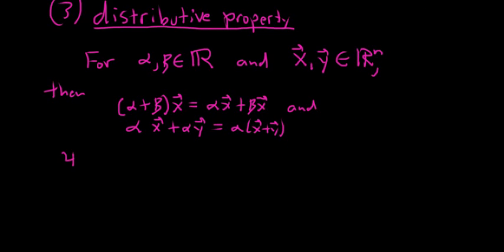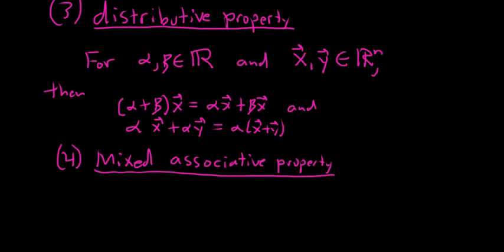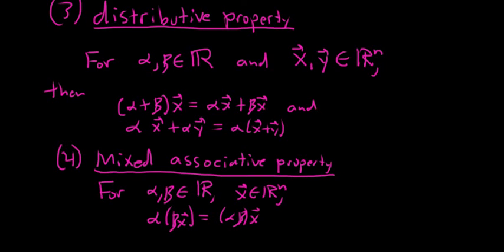Then we have four, which is called mixed associativity or the mixed associative property. It's kind of a strange property, not something people often talk about. People almost take it as common sense. For alpha and beta in the real numbers and vector x in R^n, this is sometimes useful: if you have alpha times (beta x), this equals (alpha beta) x.